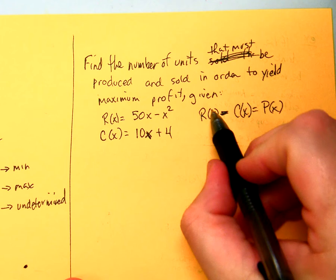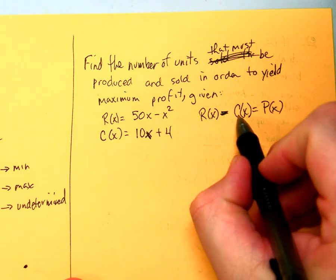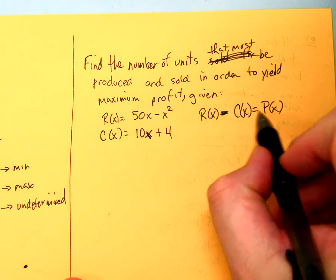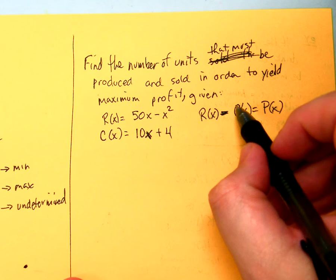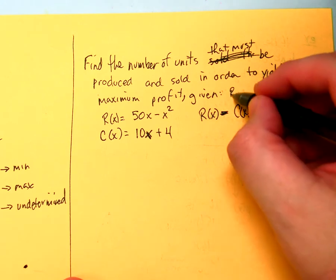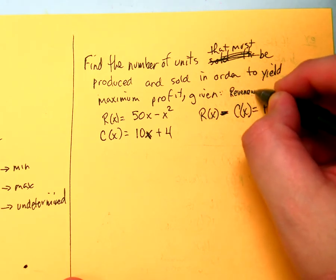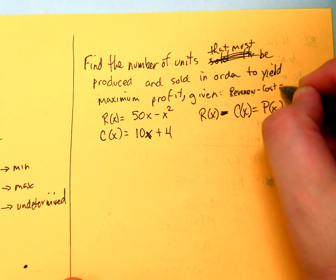So the amount of money you bring in minus the cost that it takes to produce is going to be equal to your profit. So revenue minus cost equals profit.